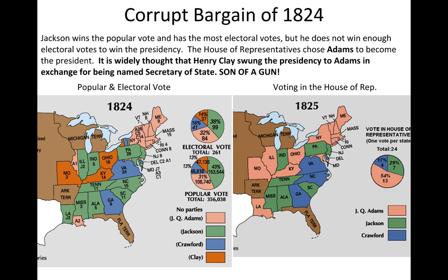John Quincy Adams strikes a deal with Henry Clay, saying: if you get me support and I win the presidency, you become my Secretary of State. Being Secretary of State was a big deal because most individuals who served as Secretary of State later became president. This becomes known as the Corrupt Bargain of 1824, because that is exactly what happens — Adams and Clay swing this little deal. John Quincy Adams becomes president, and Jackson loses, even though he had the majority of the electoral votes and the popular vote.